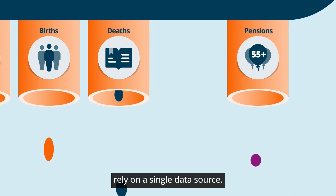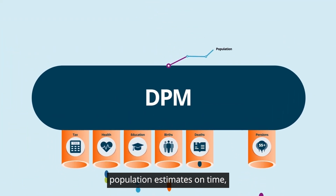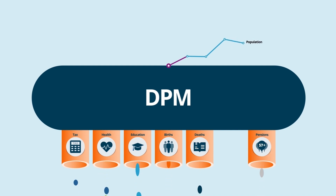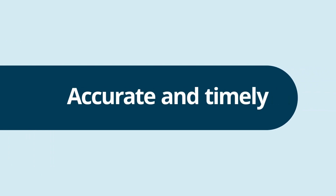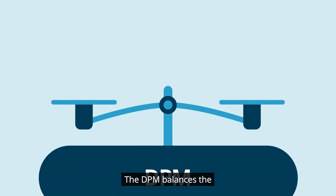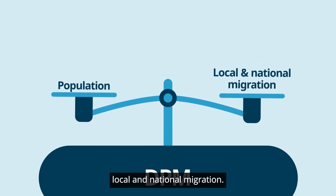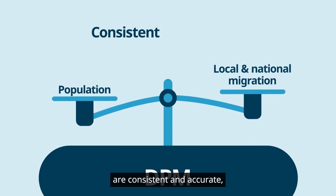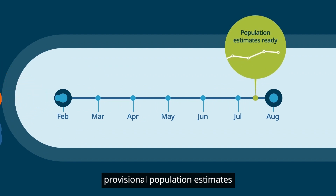And because it doesn't rely on a single data source, it can produce high quality population estimates on time, even when a data source changes. The DPM balances the count of the population alongside local and national migration.